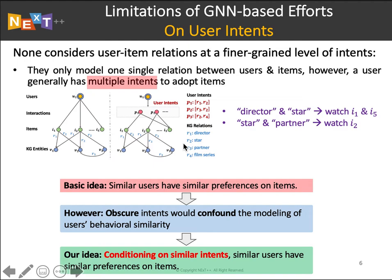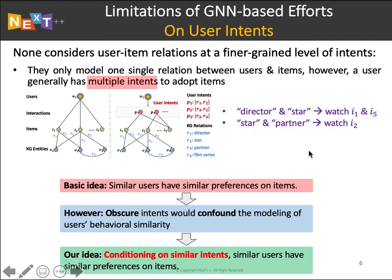When inspecting current GNN-based works, we find they fall short in modeling two factors. The first factor is user intent. Current work assumes there is only one relation between users and items, and none consider relationships at finer granularity levels. They ignore the fact that a user generally has multiple intents to adopt items. For example, user U1 watches items I1 and I4 due to a combination of director and star, while watching I2 due to a combination of star and its partners. Ignoring user intent limits the modeling of behavioral similarity among users, because different intents cause different behaviors.